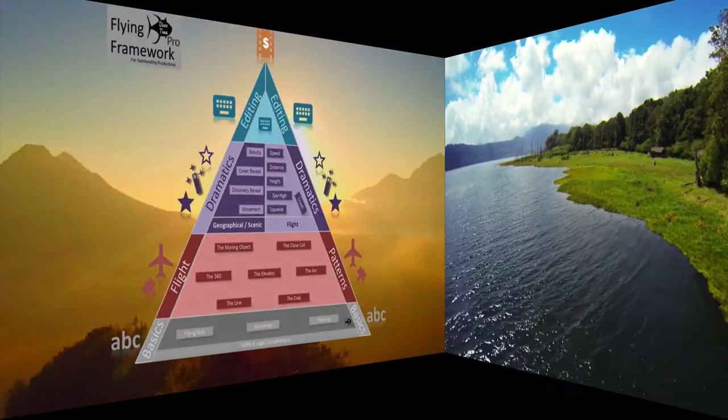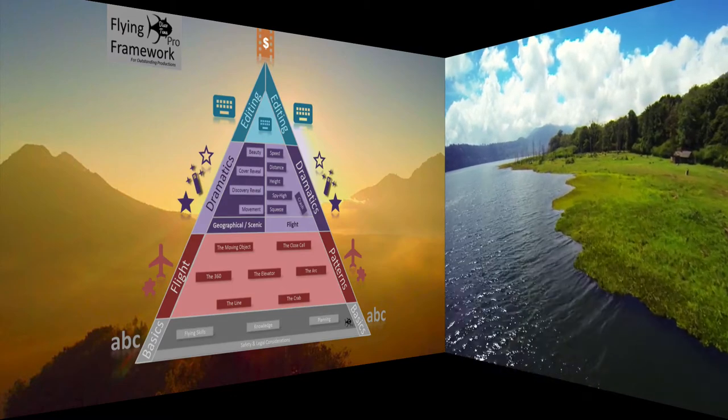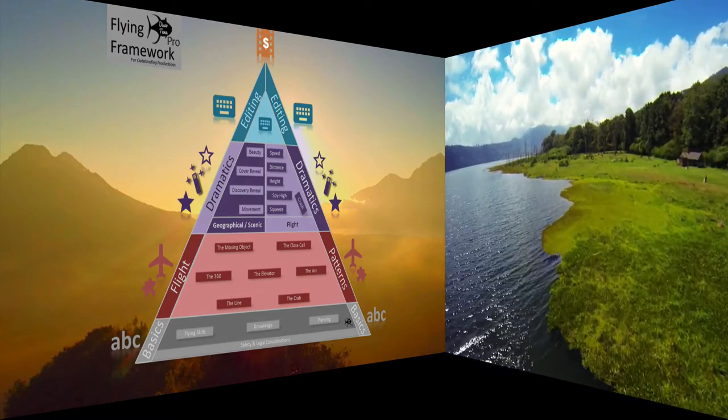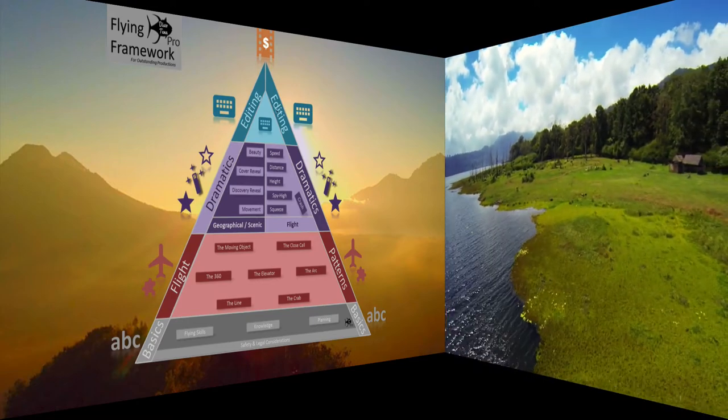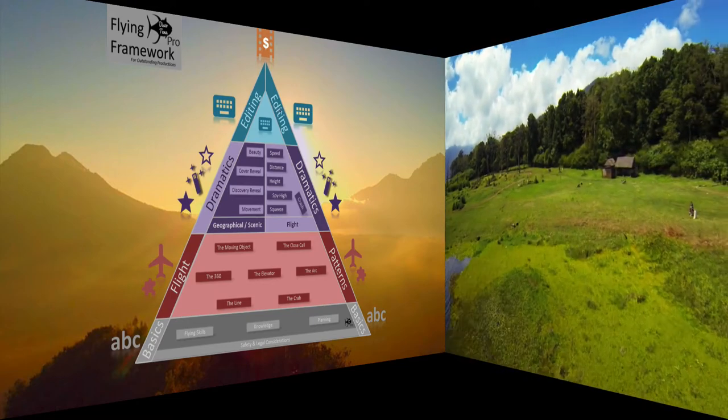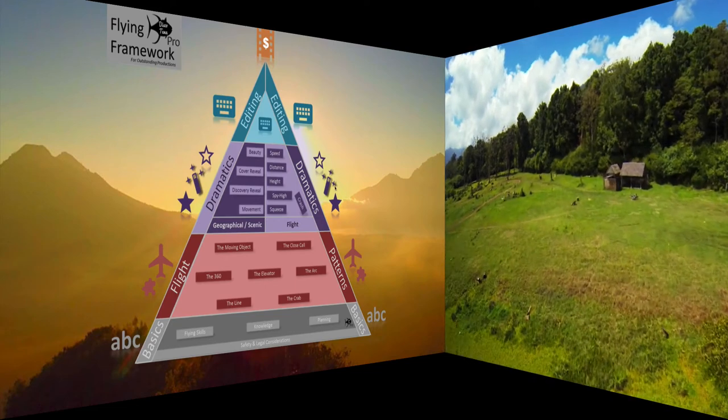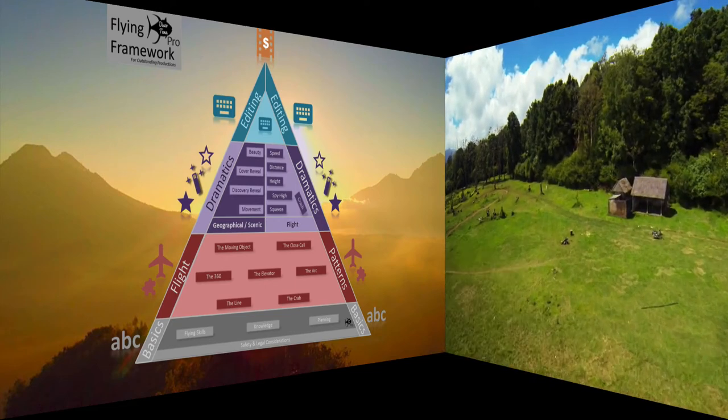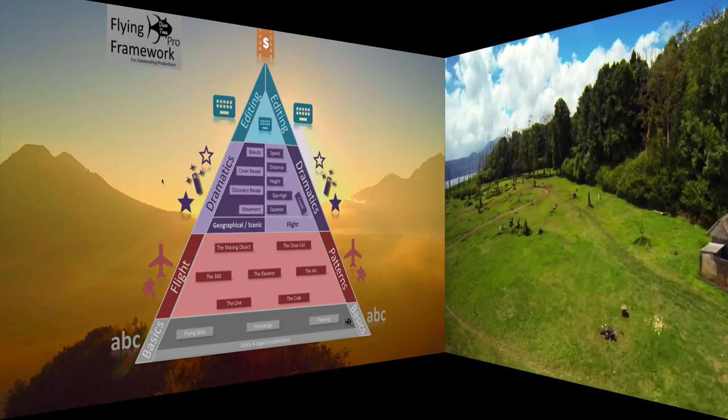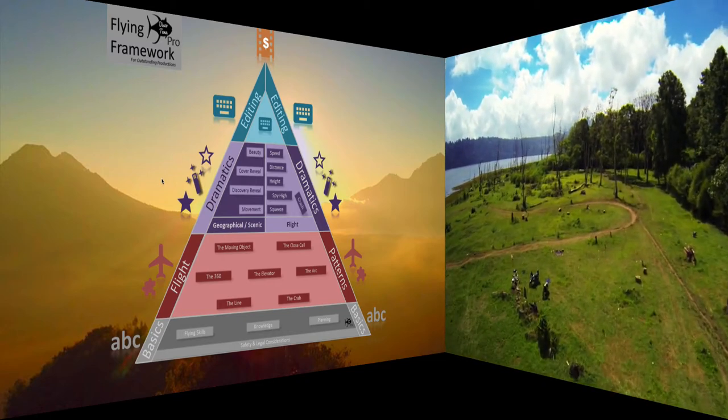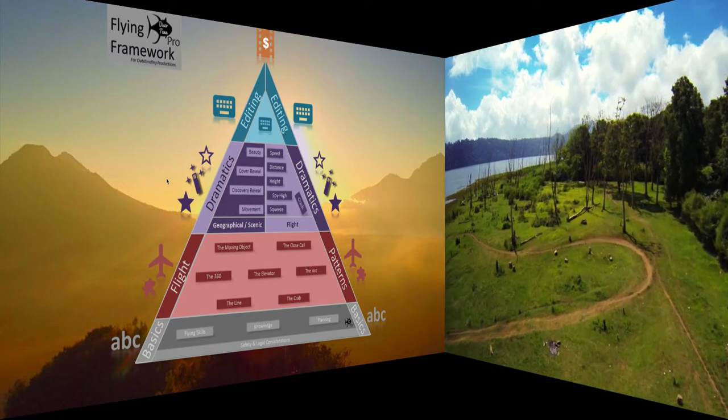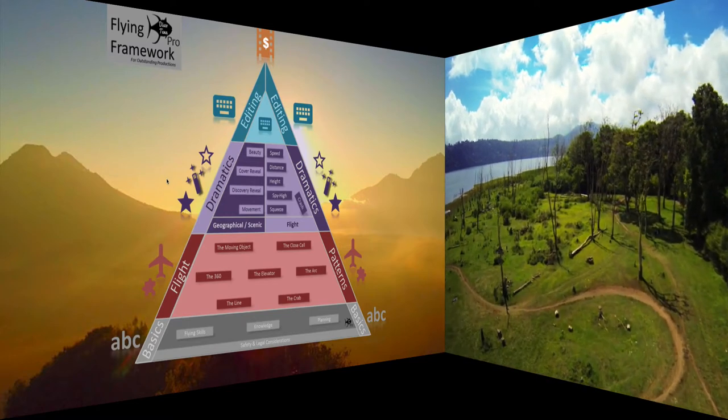As a quick recap, working backwards, you're aiming to make an outstanding video. You've collected some footage which you're going to edit into that video. The footage that you've selected is going to have dramatic elements within it. The dramatic elements will have been generated from you having selected a series of different flight patterns that you've used to fly through the landscape to collect the footage.